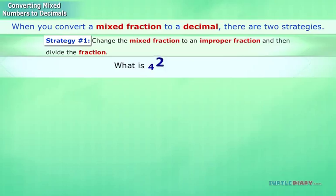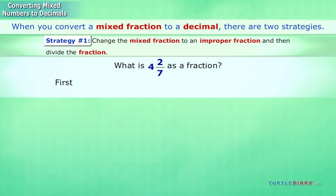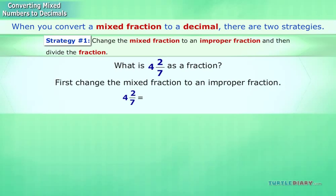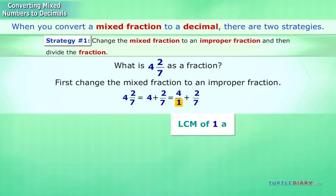What is 4 and 2 sevenths as a decimal? First, change the mixed fraction to an improper fraction. 4 and 2 sevenths equals 4 plus 2 sevenths, which equals 4 over 1 plus 2 over 7. The LCM of 1 and 7 is 7. 2 sevenths already has 7 as the denominator.